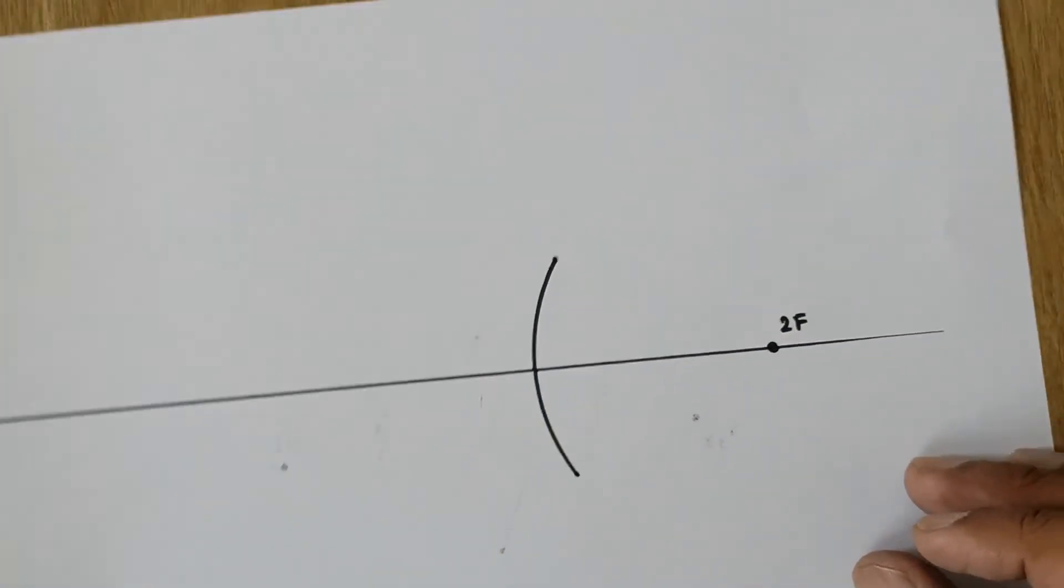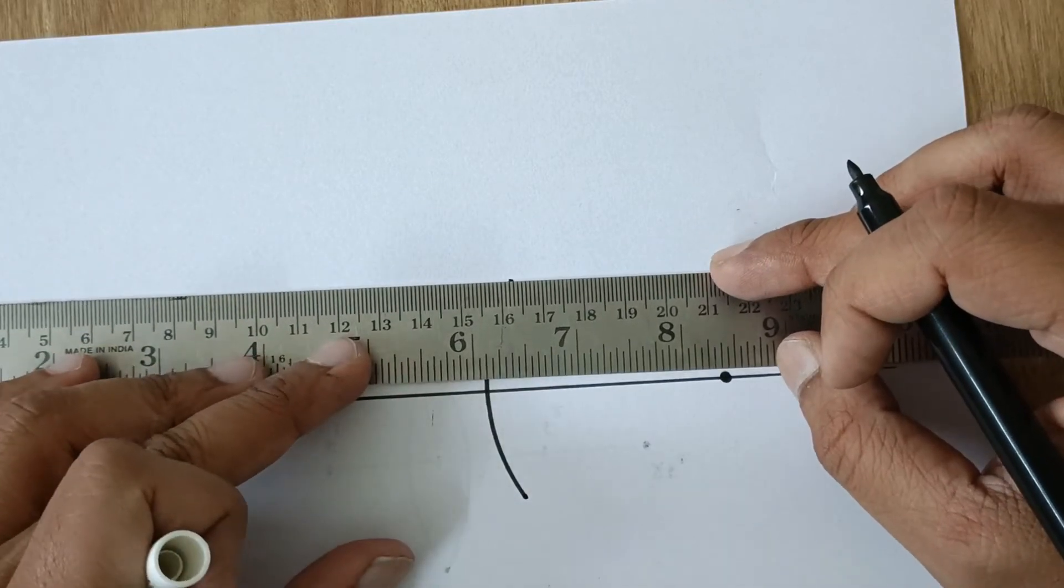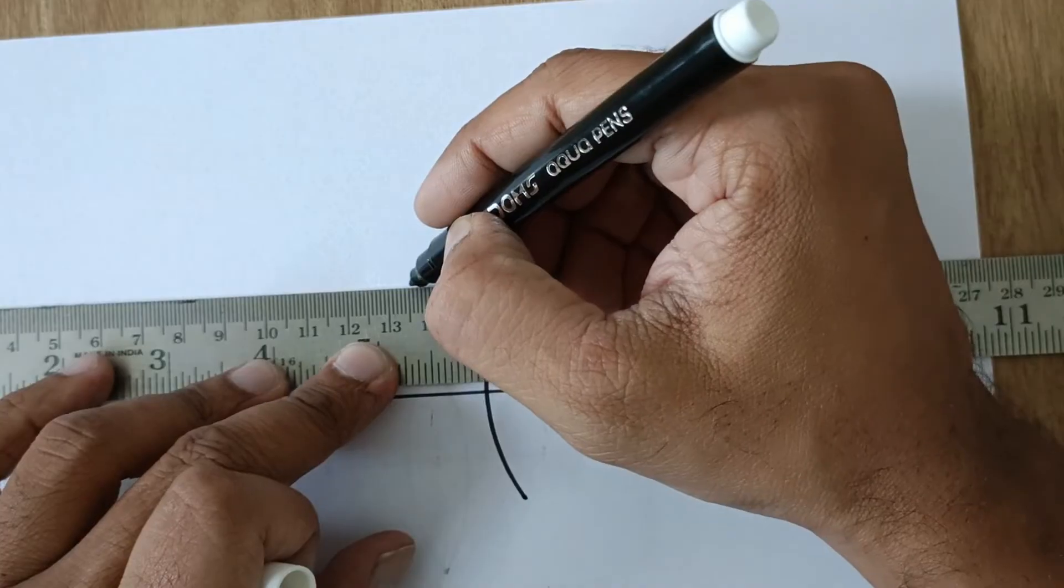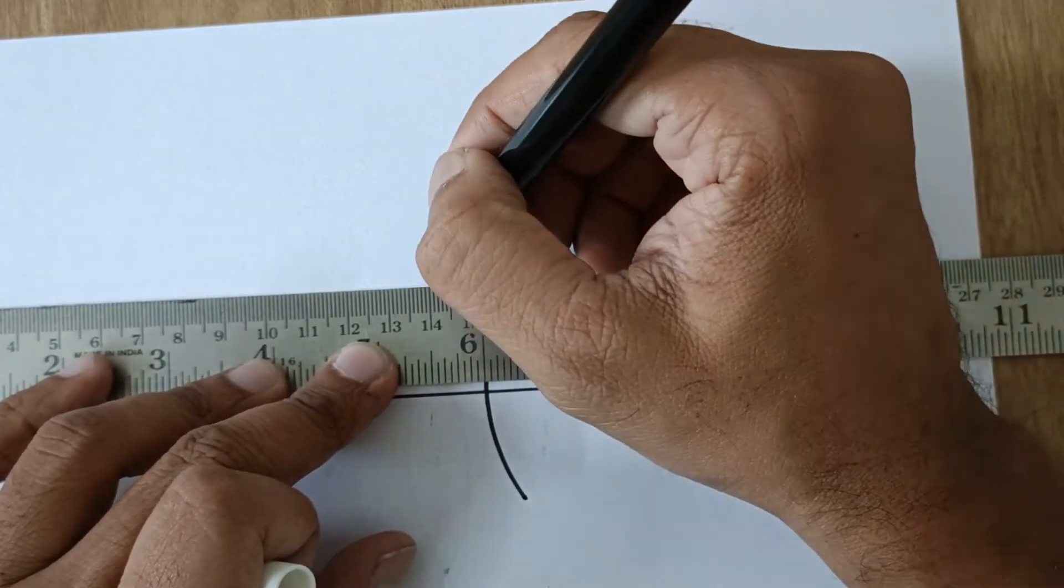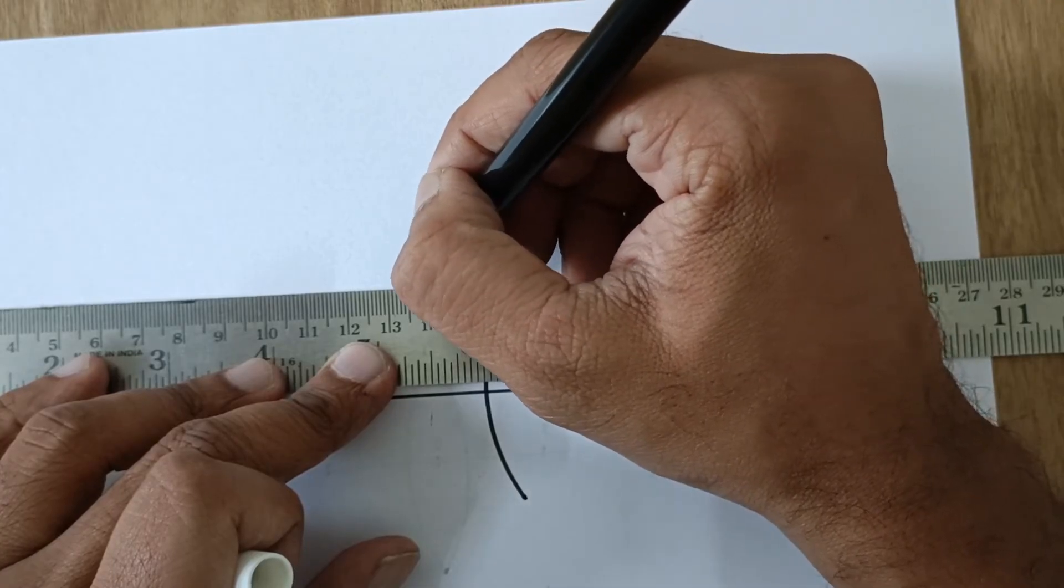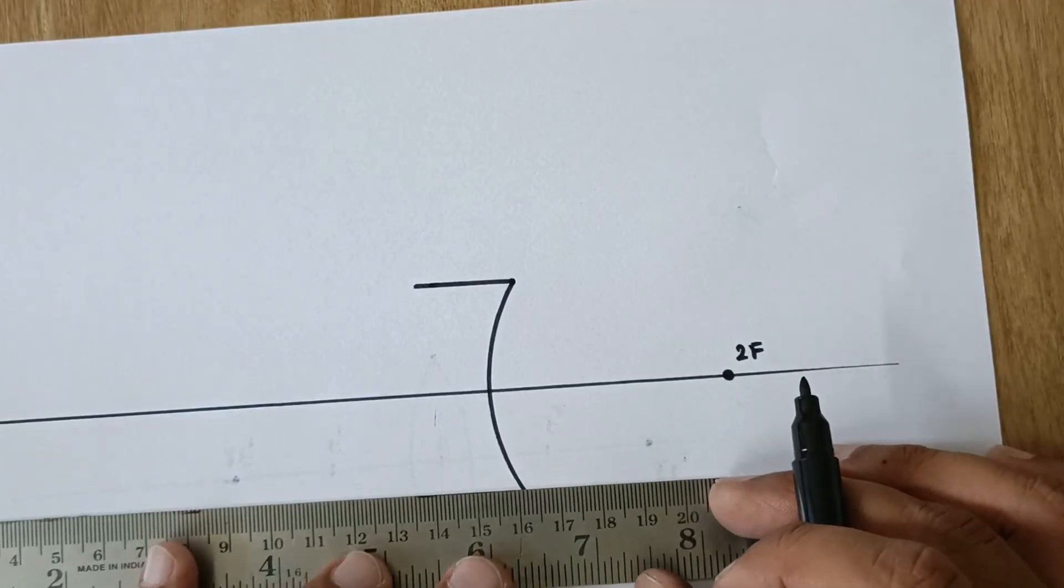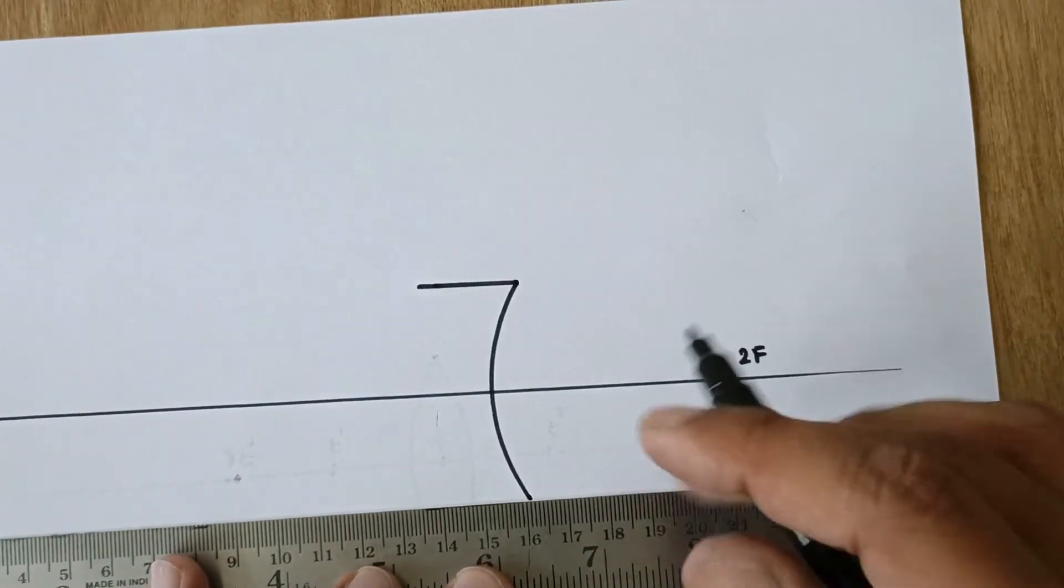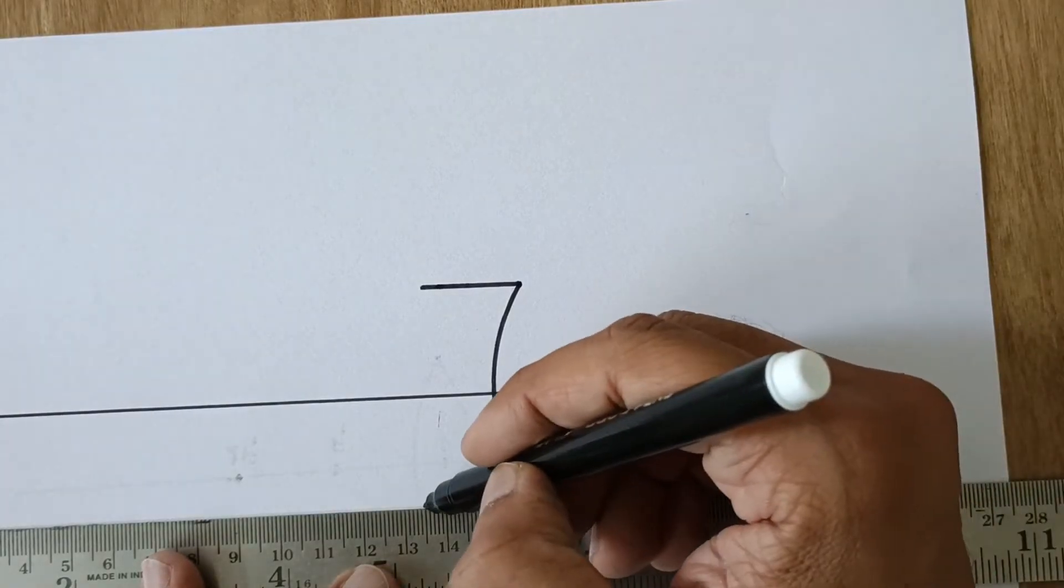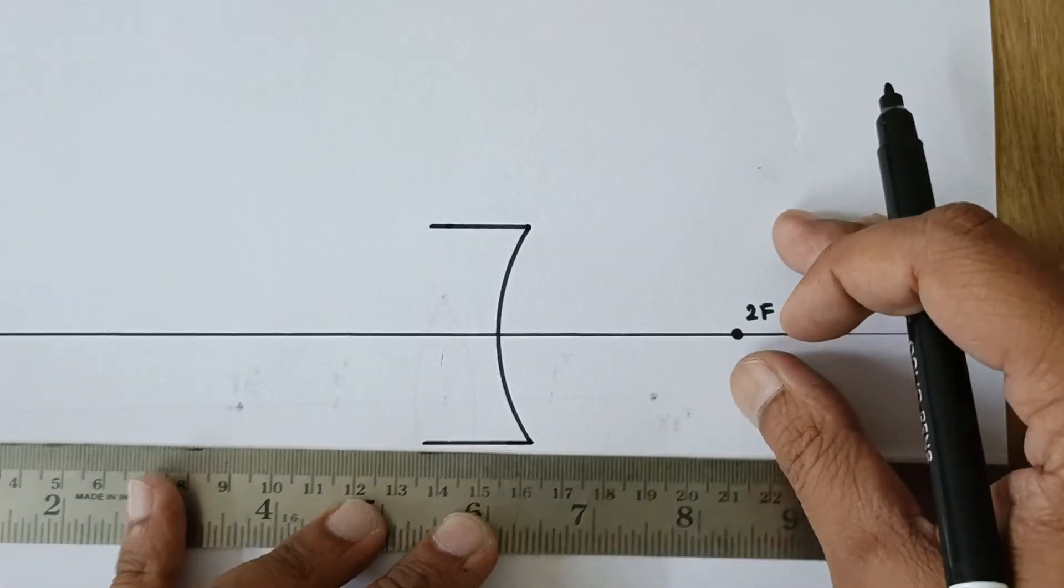Now draw about two and a half centimeters straight line parallel to the principal axis. Like suppose this is 16, so two and a half is somewhere over here. And here again, two and a half centimeters line from this bottom point such that this line, this line, and the principal axis should be parallel.